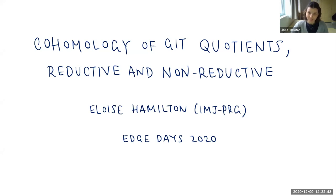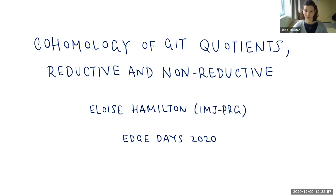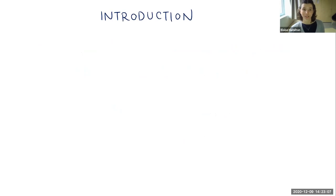When I say geometry of moduli spaces, I really mean the cohomology — the rational cohomology. I'll be working over complex varieties. I won't assume any prior knowledge of non-reductive GIT; I'll start with a quick introduction so that I can be a little more precise about the question I'm interested in.